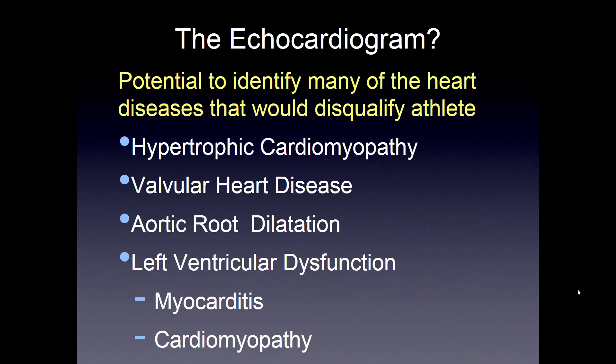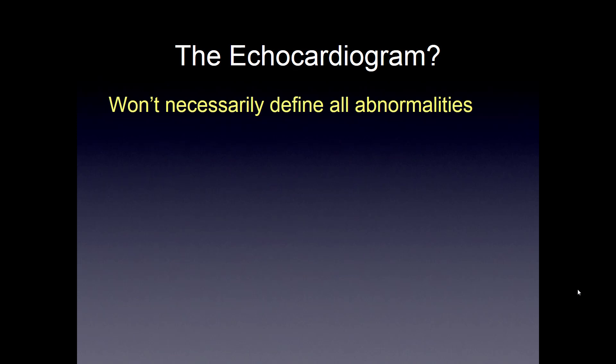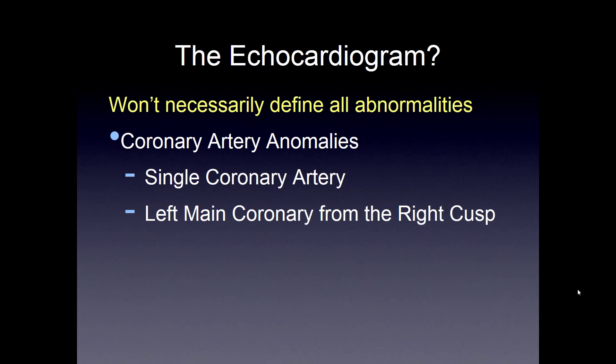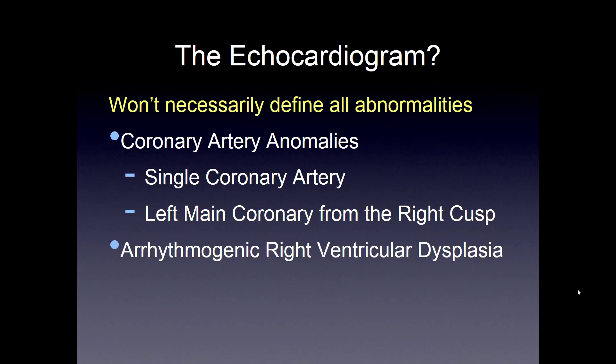The echocardiogram is another potential screening tool. It's pretty good at picking up hypertrophic cardiomyopathy, valvular heart disease, aortic root dilatation, left ventricular dysfunction, myocarditis, and cardiomyopathy. But it won't necessarily define all abnormalities either — coronary artery abnormalities, single coronary artery, or left main coronary artery anomalies are probably not going to be detected, and it doesn't pick up arrhythmias.